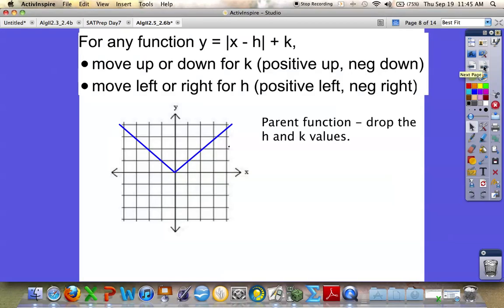We're going to go back to your absolute value functions. Y equals X minus H plus K. What we have is a parent function. A parent function is any time you remove the H and the K numbers, what is remaining is the parent. So in this case, the parent is Y equals the absolute value of X. And I've taken the liberty of plotting that over here on the board. This is the parent for Y equals absolute value of X.